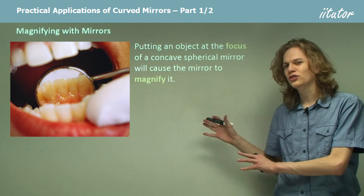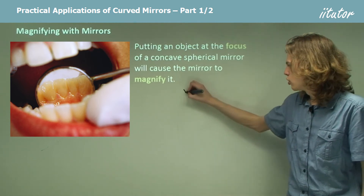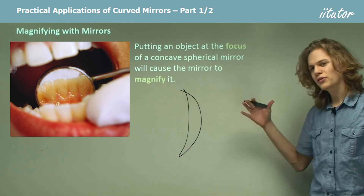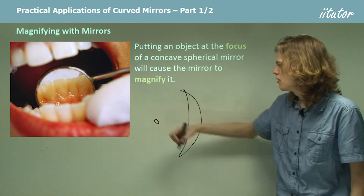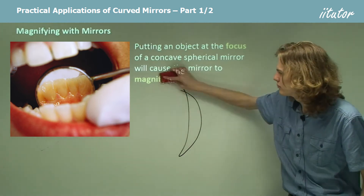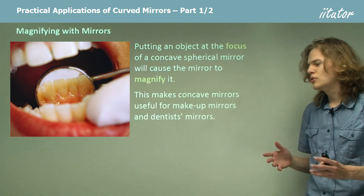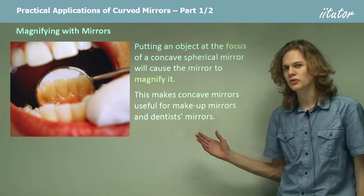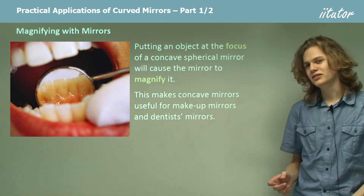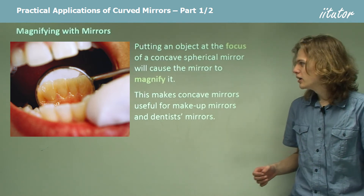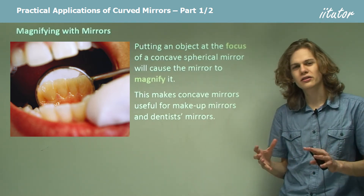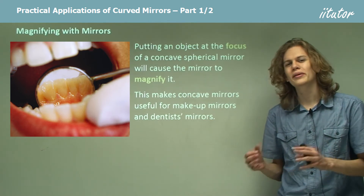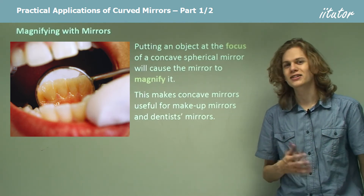We can't do this in a convex mirror because to put something at the focus would mean putting it behind the mirror and then we wouldn't be able to see it at all. Concave mirrors are very useful for, for example, makeup mirrors or dentist's mirrors. If a dentist needs to see a patient's teeth in detail, he can hold up a concave mirror so that the teeth are at the focus of the concave mirror. Then the reflection in the mirror will appear larger and easier to see.